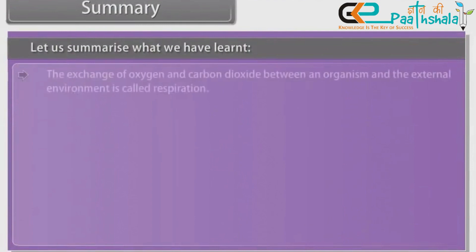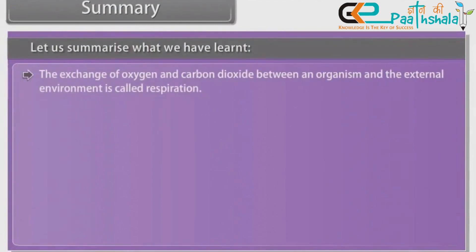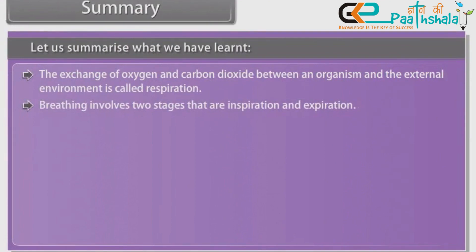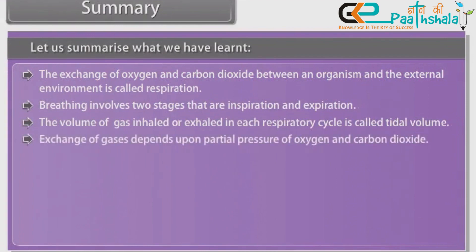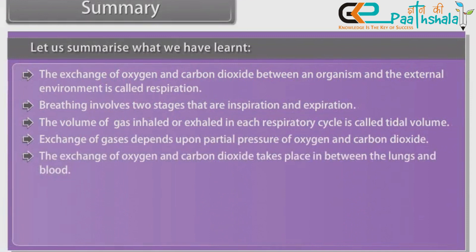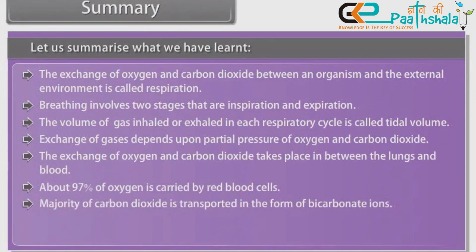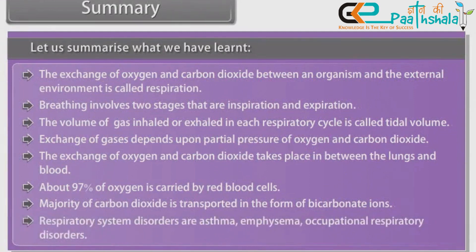Summary. Let's summarize what we have learned. The exchange of oxygen and carbon dioxide between an organism and the external environment is called respiration. Breathing involves two stages: inspiration and expiration. The volume of gas inhaled or exhaled in each respiratory cycle is called the tidal volume. Exchange of gases depends upon partial pressure of oxygen and carbon dioxide. About 97% of oxygen is carried by red blood cells. Majority of carbon dioxide is transported in the form of bicarbonate ions. Respiratory system disorders are asthma, emphysema, and occupational respiratory disorders.